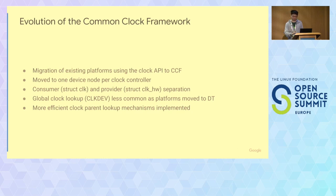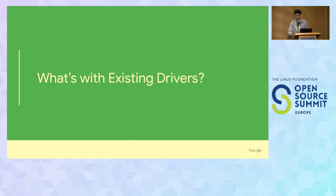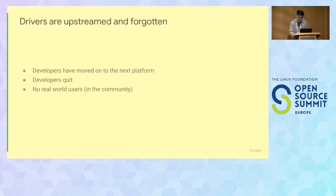Previously, there was only one way to describe your clock tree — purely based on strings. You'd match your parents based on strings. Now there's a way to specify clock parents as local clock parents either through the device tree or through internal pointers. So what's wrong with the existing drivers? A lot of the time drivers are upstreamed and then forgotten about. Developers will upstream a driver and when it's working, they'll move on to the next platform.